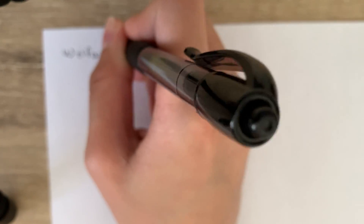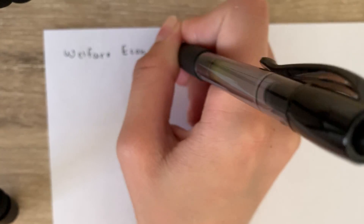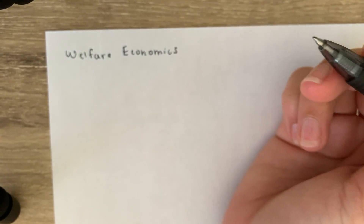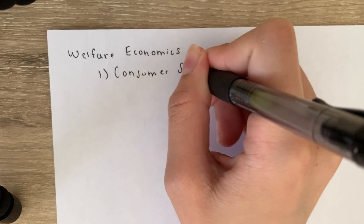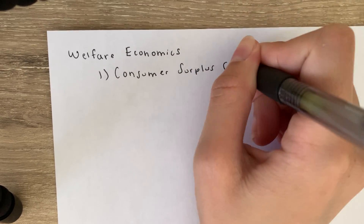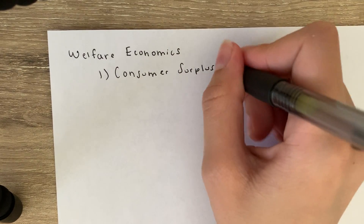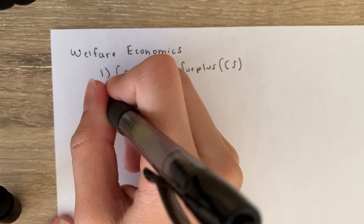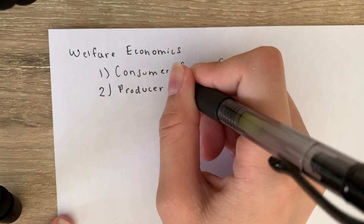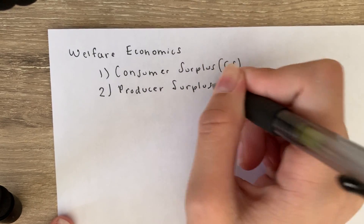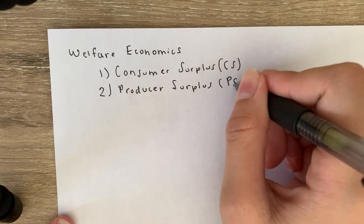Hey everybody, so today we're going to be talking about welfare economics. There are two types of benefits in the market: the first one is consumer surplus, often abbreviated as CS, and the second one is producer surplus, abbreviated as PS.